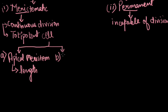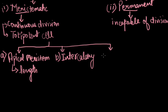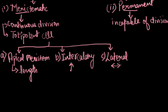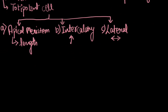The second category is the intercalary meristem. The lateral meristem is also called the secondary meristem, which is responsible for increasing the diameter or girth of the plant. So to increase the width of the plant is the main function of the lateral meristem.